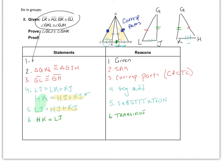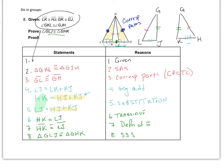Step seven: HK segment is congruent to segment LJ — by definition of congruent. Step eight, the final step: triangle GLJ is congruent to triangle GHK, and this was by side side side. Again, there is more than one way to do it, but this is the one I chose. Hopefully that helps — we'll do a few more examples in class. Thanks for watching, hit that like and subscribe button, and I will see you guys in the next video.